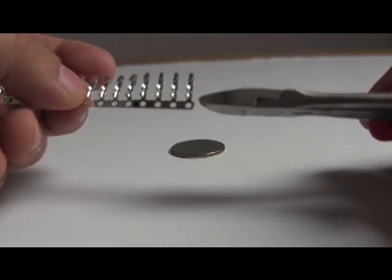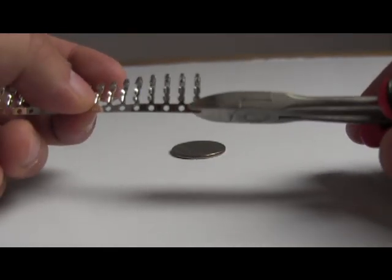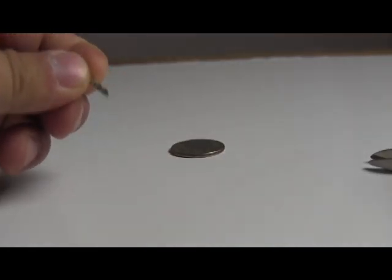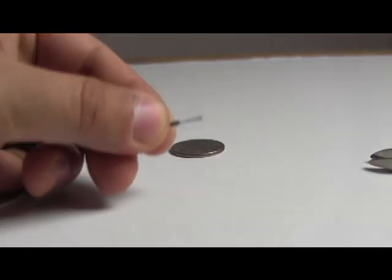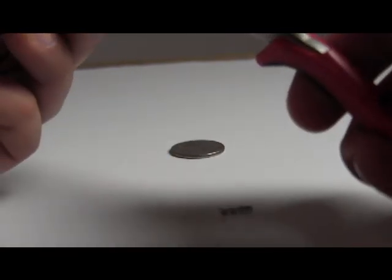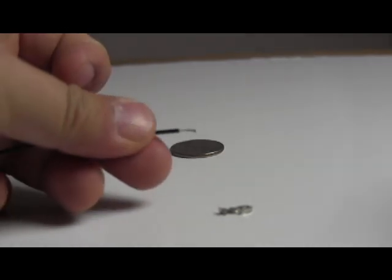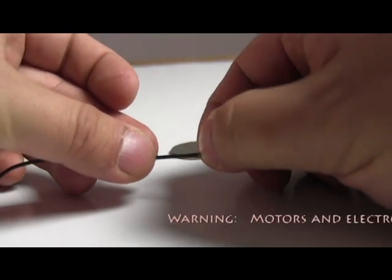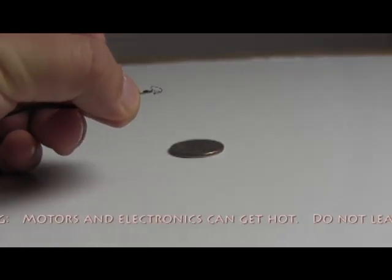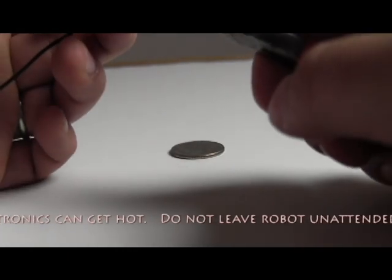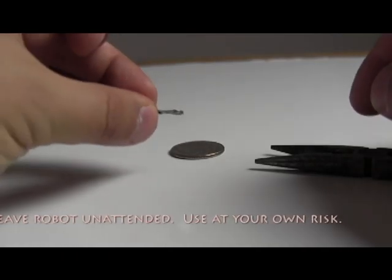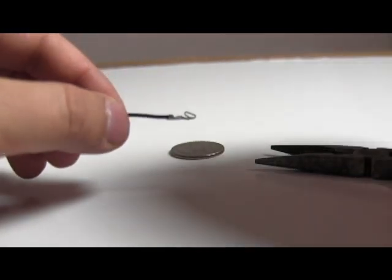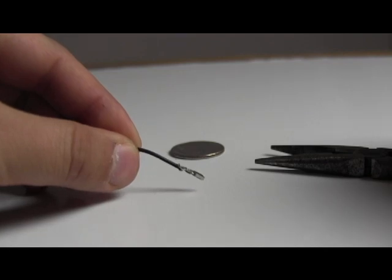First we want to snip off a connector like that. Then we want to twist this wire, have about five millimeters of wire and then we crimp it. You just use the long nose pliers here like so. Now to make sure that this connection is not going anywhere I'm going to add a little bit of solder.